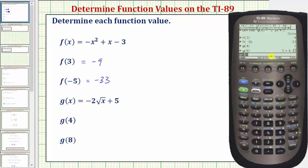If we were in approximate mode, it would only display a decimal approximation. Let's record these two function values, and then look at a second method for determining function values. g of four is equal to one, and g of eight equals five minus four square root two.